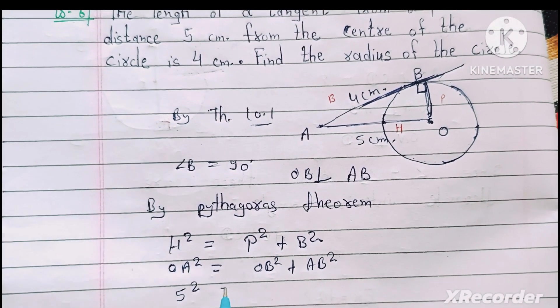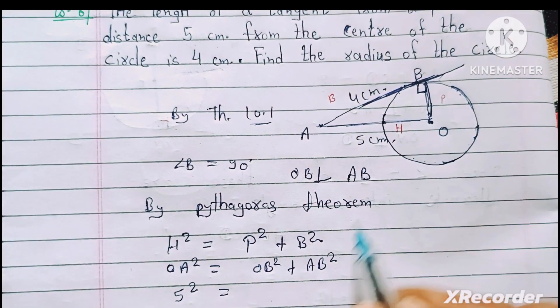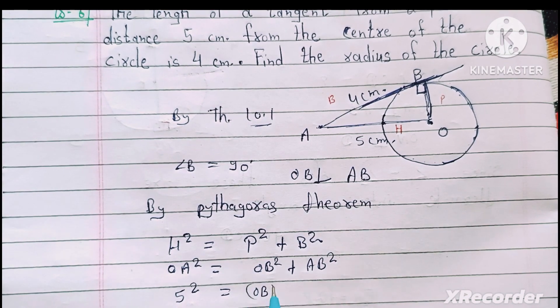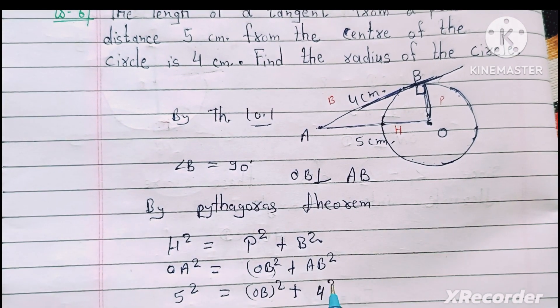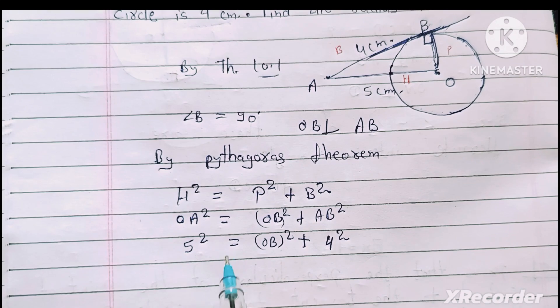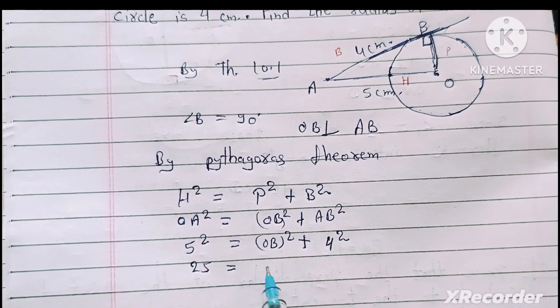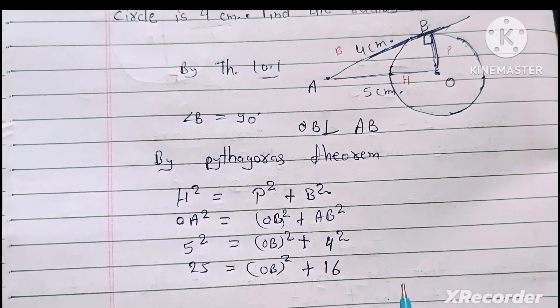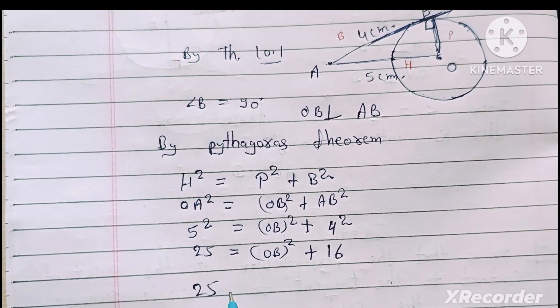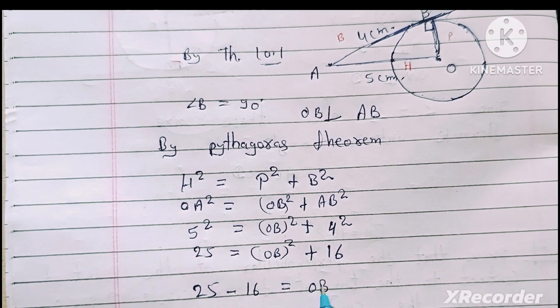Plus AB ki value hai 4 cm means 4 square. Ab yahape 5 times 5 ho jayega 25 is equal to OB square plus 4 times 4 is 16. 25 minus 16 ho jayega is equal to OB square.